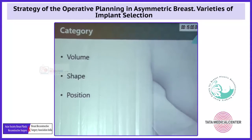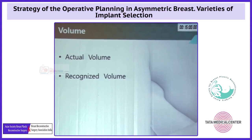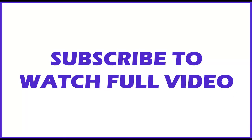I classify the asymmetric parameters as volume, shape, and position. There are two different concepts of breast volume: actual volume and recognized volume, for example.